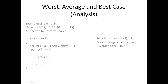What is the worst case? If you search for the last element — for example, searching for 25 from the array where 25 is the last element — that is the worst case. We have to loop through the whole array until the last element, so the worst case time complexity will be O(n).